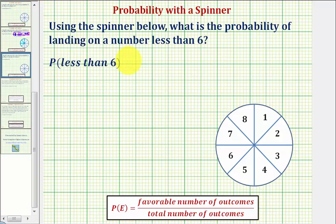So for the probability being less than six, let's first determine the total number of outcomes using the spinner. Well, because we have eight equal size sections numbered from one through eight, notice each spin has a total of eight possible outcomes.